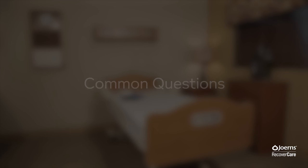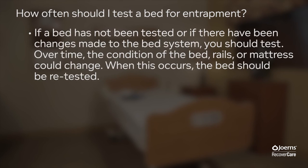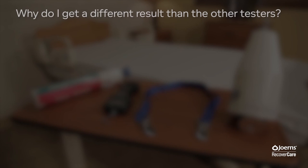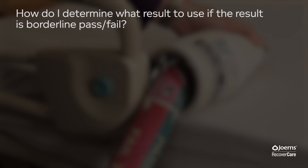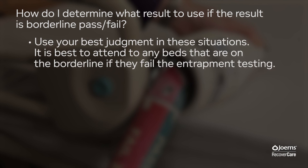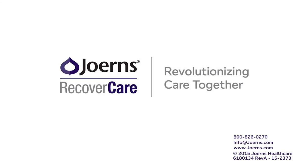Common questions: How often should I test a bed for entrapment? If a bed has not been tested or if there have been changes made to the bed system, you should test. Over time, the condition of the bed, rails, or mattress could change — when this occurs, the bed should be retested. Why do I get a different result than other testers? All tools are designed to provide a consistent result, but some testers interpret results differently — please double check your results. How do I determine what result to use if the result is borderline pass or fail? Use your best judgment, and attend to any beds that are on the borderline if they fail. This concludes the entrapment testing video. Thank you for watching — for more information or further assistance, please call our 800 number or visit our website at www.jerns.com.